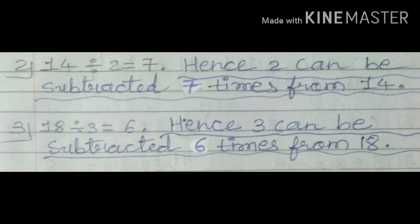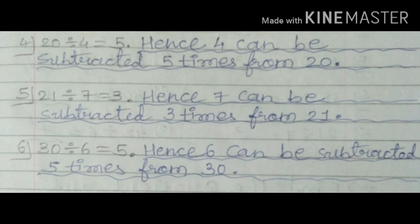Let's see number 3: 18 divided by 3 is equal to 6. If we divide 18 by 3, the answer is 6. Hence, 3 can be subtracted 6 times from 18. This means we can subtract 3 from 18 six times. Let's see number 4: 20 divided by 4 is equal to 5. If we divide 20 by 4, the answer is 5.